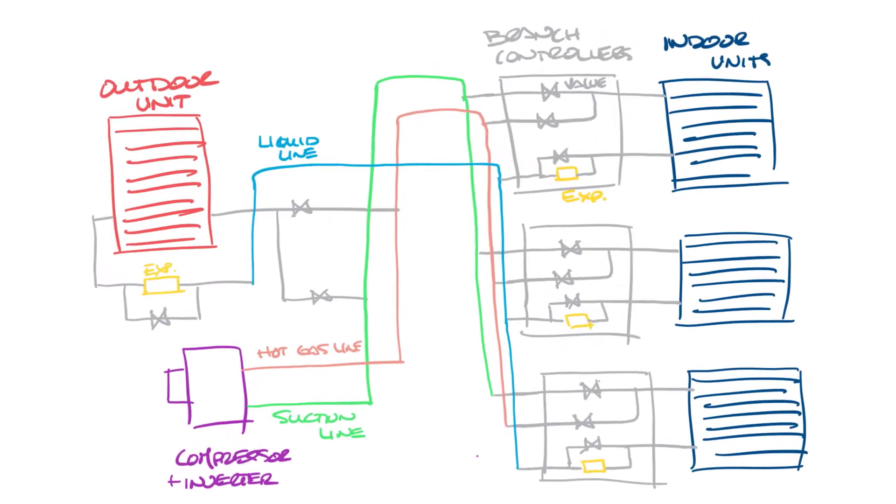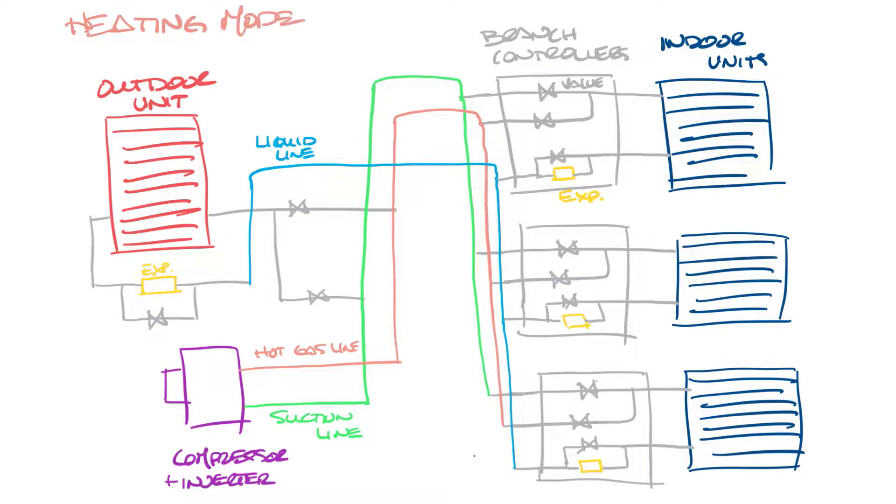Now let's look at what happens during heating mode. Starting again at the compressor, the hot gas comes out of the compressor and through the hot gas line. Now because we're in heating mode we want to send this to the indoor units. So it'll come in and go into each of the indoor units. Air flow will pass through it and send heat into the spaces. Now the refrigerant comes out and goes through the expansion device in each of the branch controllers which will cool it down and connects it back to the liquid line.